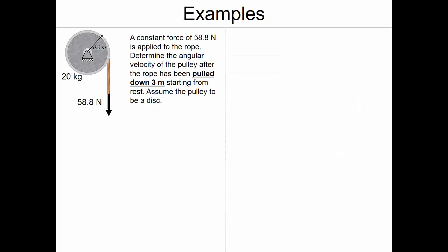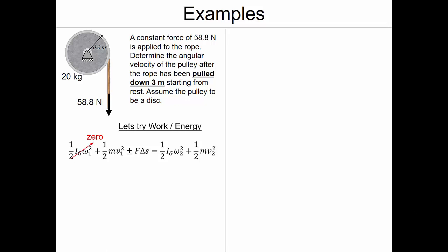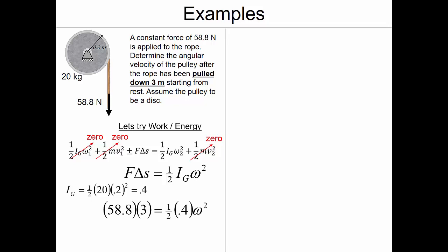Example: a 20-kilogram spool with radius 0.2 meters has a constant force of 58.8 newtons applied downward for 3 meters starting from rest, and we assume the pulley is a disk. We want the angular velocity after being pulled 3 meters. Since the relationship involves distance, we use energy. Initially at rest, no rotational or translational energy; in the end the spool is not translating. So: force times change in position equals one-half mass moment of inertia times angular velocity squared. With mass moment of inertia equal to 0.4, solving gives omega = 29.7 radians per second.